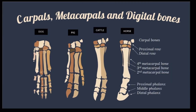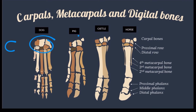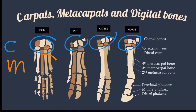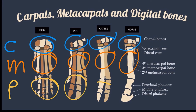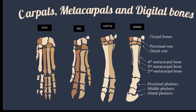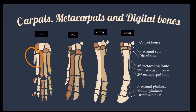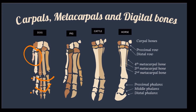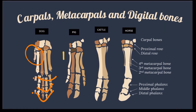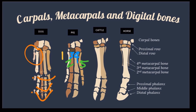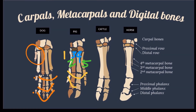The manus or hand is comprised of the carpals, metacarpals, and phalanges or digital bones. As a default, there are 5 metacarpal bones. In the dog, the first metacarpal bone has 2 digital bones; the rest have 3 digital bones, named as the proximal, middle, and distal. In pig, only 4 metacarpals are present; the first metacarpal is missing, the second and fifth are reduced, and the third and fourth are well developed, with 3 digital bones present.